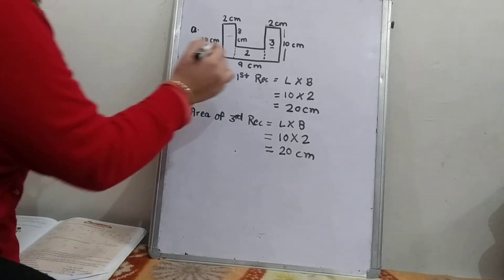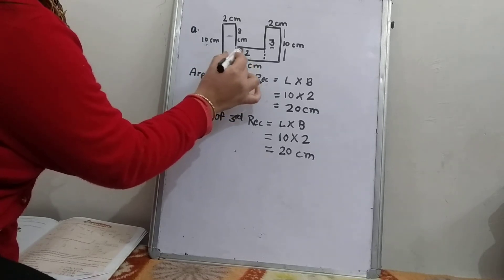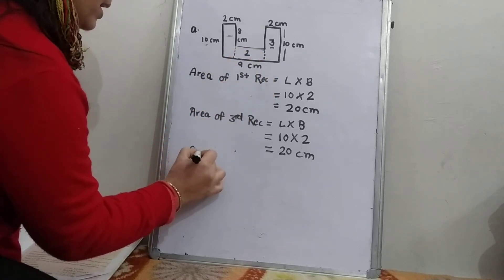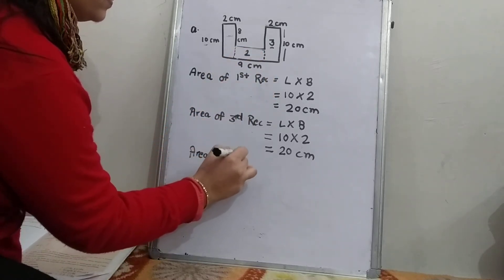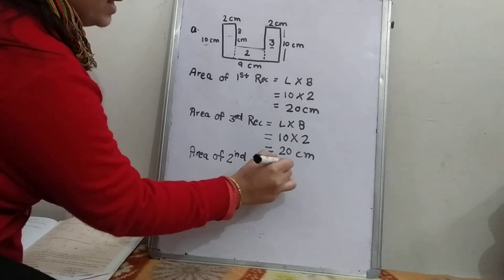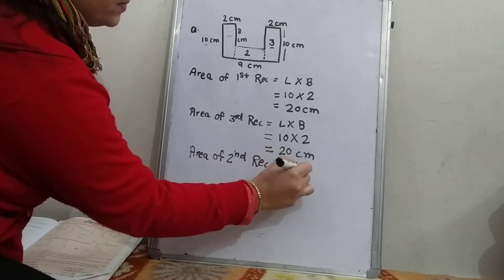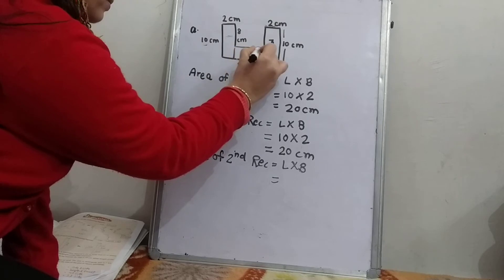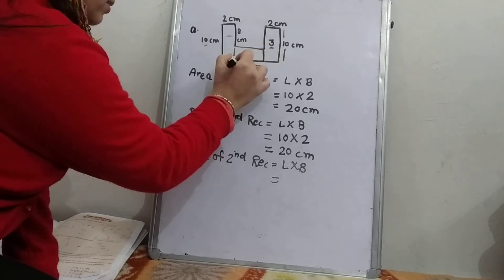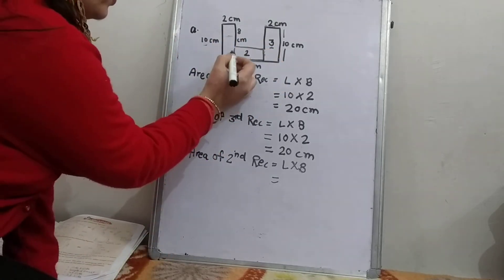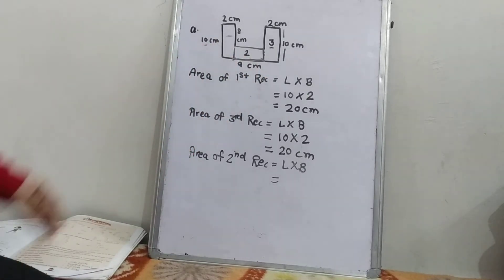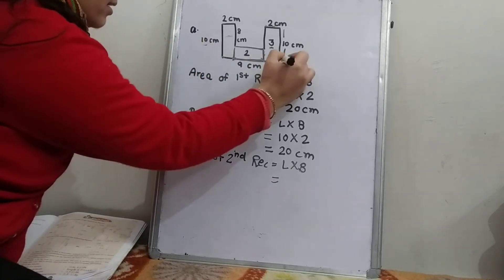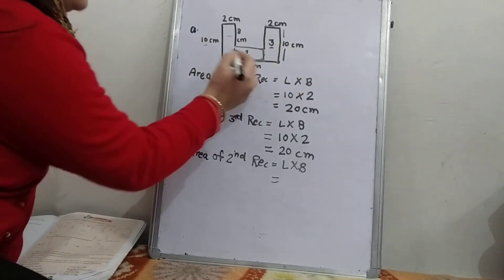Now the second rectangle is left. Area of second rectangle — again the formula is length multiplied by breadth. But we don't know the actual length from this to this. Here it is given 9 cm, but it is from here to here. We need only this part.